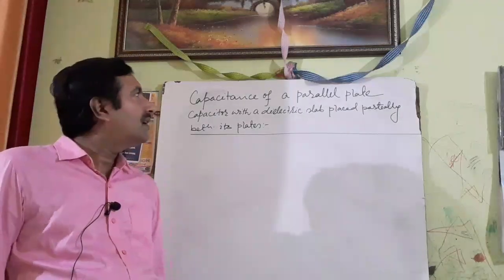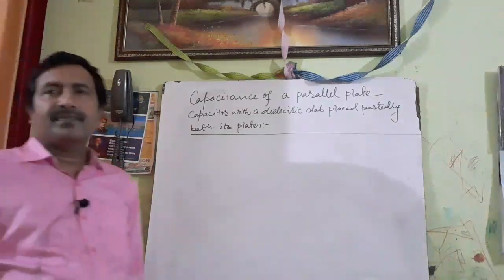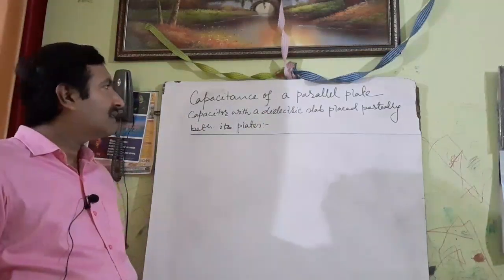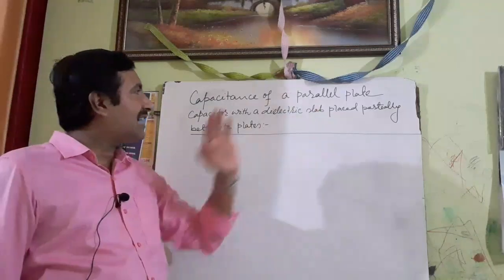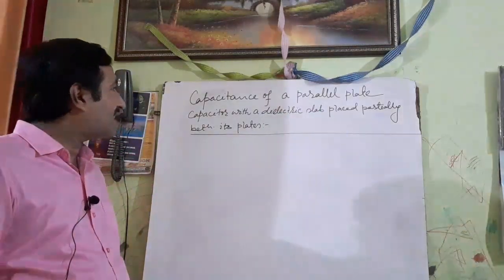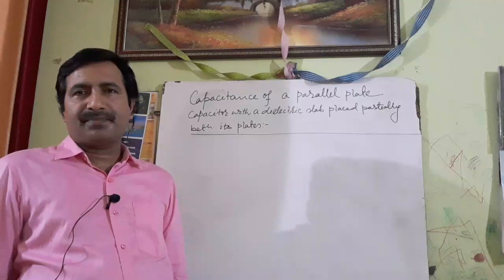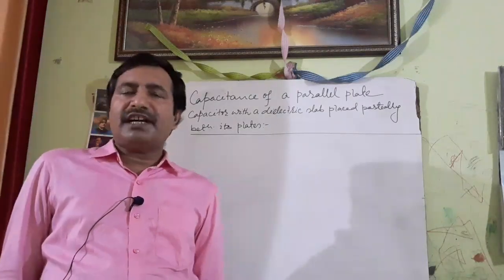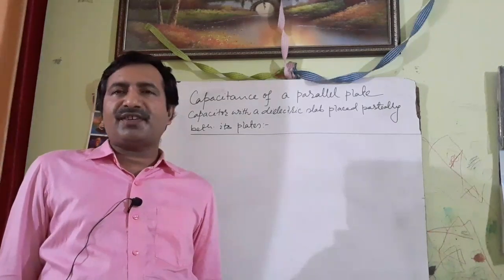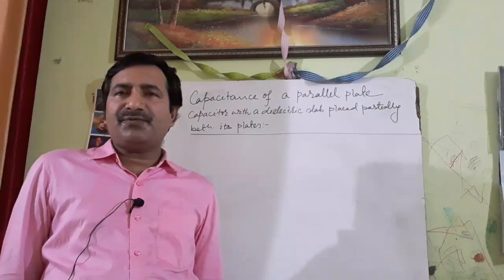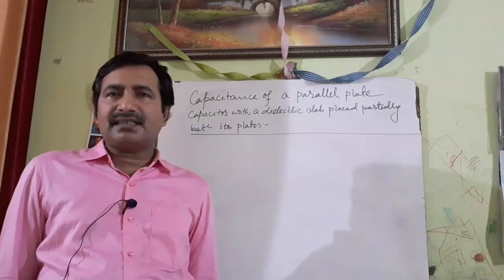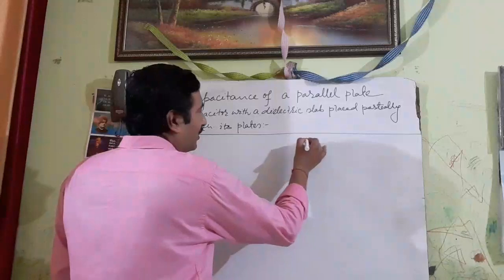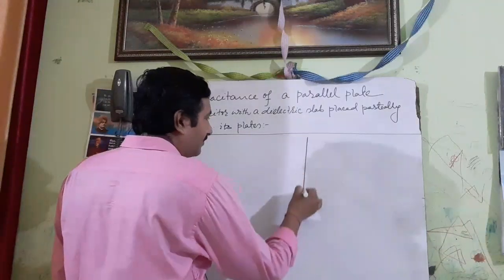In this lecture, let us discuss the capacitance of a parallel plate capacitor with a dielectric slab placed partially between its plates. In the previous topic, you learnt the capacitance of the parallel plate capacitor partially filled with a conducting slab. Here we have a dielectric slab in place of the conducting slab.